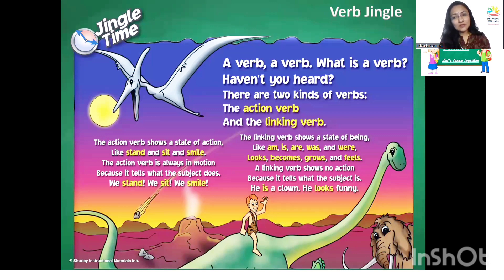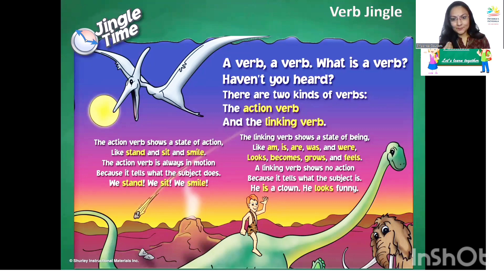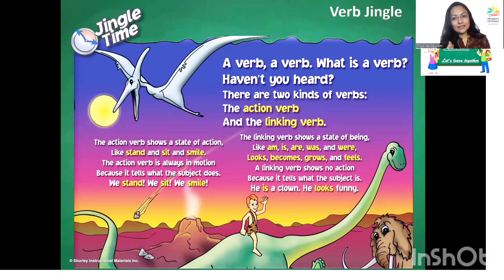The linking verb shows a state of being, like am, is, are, was, were, looks, becomes, grows, and feels. The linking verb shows no action because it tells what the subject is. He is a clown. He looks funny. So, that is a linking verb.